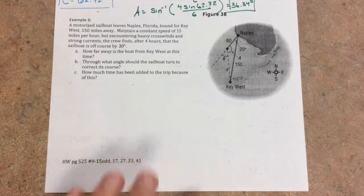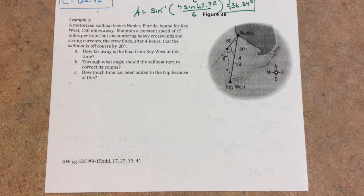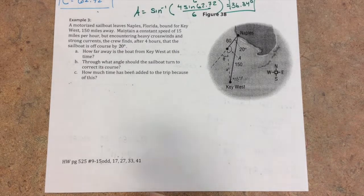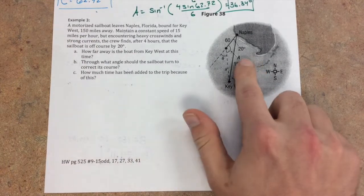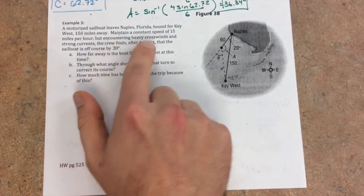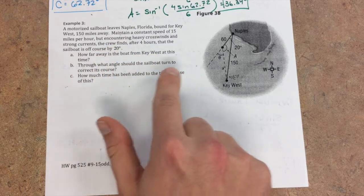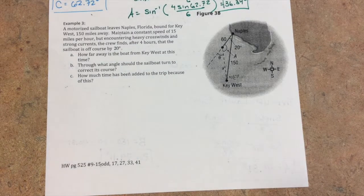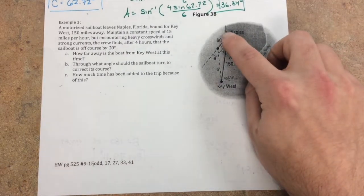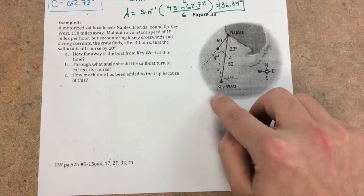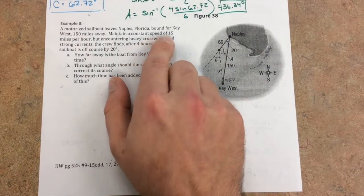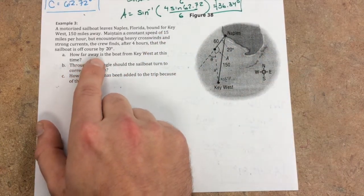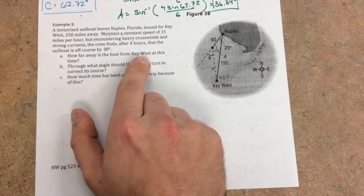One more story problem, and then you guys are done with level 8. With example three, a motorized sailboat leaves Naples, Florida, spring break area, bound for Key West, 150 miles away. Maintain a constant speed of 15 miles per hour, but encounter heavy crosswinds, strong currents. The crew finds, after four hours, the sailboat is off course by 20 degrees. In this picture, they're off by 20 degrees. This is 150 miles away, and if they're going 15 miles per hour and they go four hours, that's 60 miles.